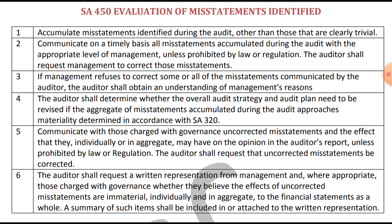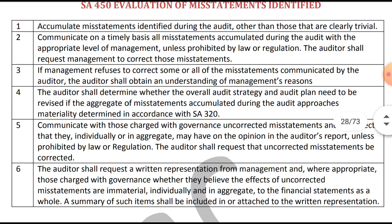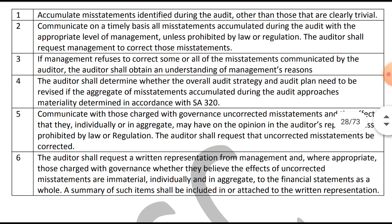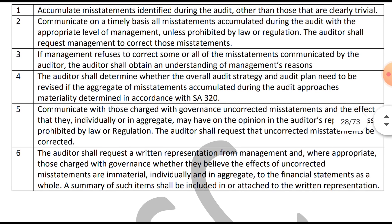The third point: if the management refuses to correct some or all of the misstatements communicated by the auditor, the auditor shall obtain an understanding of management's reasons. So if management refuses, the auditor shall ask for the reason and should consider the same. The auditor shall also determine whether the overall audit strategy and audit plan need to be revised.